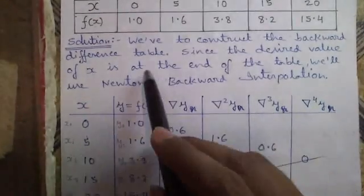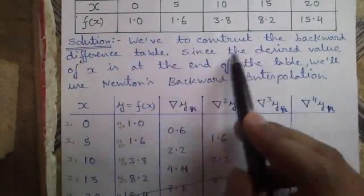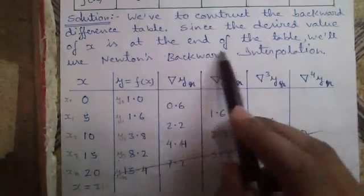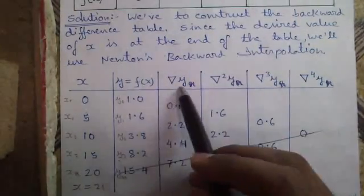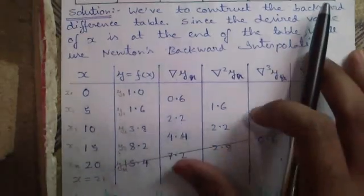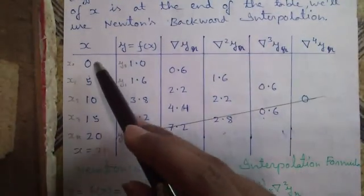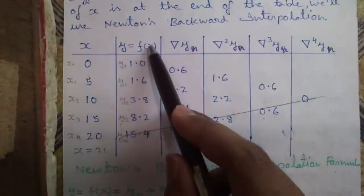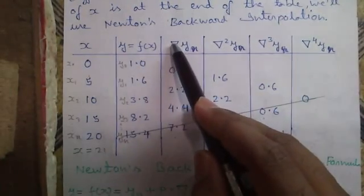Now, to find the solution, we have to construct the backward difference table. Since our desired value x is at the bottom of the table, we will use Newton's backward formula. To make this table, construct the structure column-wise and write x and y equal to f(x) — both are the same. This symbol is called Nabla.